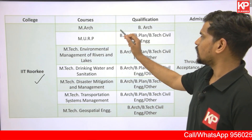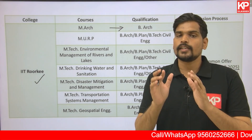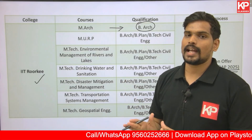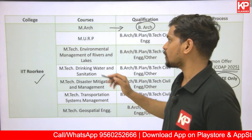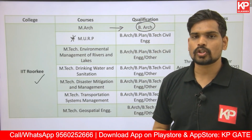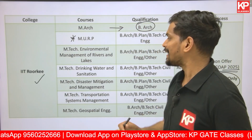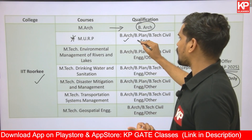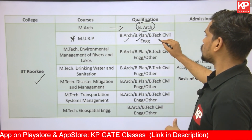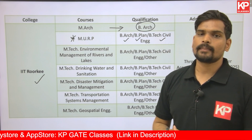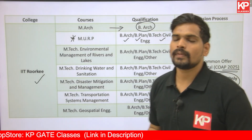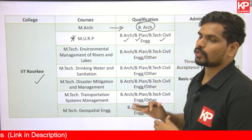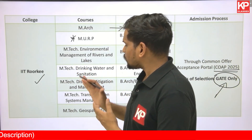For the M.Arch course at IIT Roorkee, the required qualification is only B.Arch. B.Plan or B.Tech Civil Engineering graduates are not eligible — only B.Arch graduates. For M.URP, which is Masters in Urban and Regional Planning (M.Plan degree), B.Arch, B.Plan, and B.Tech Civil Engineering graduates are eligible, with admission based purely on GATE Architecture score.